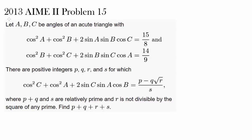We have a question from 2013 AMC 2, Problem 15. The question involves angles ABC of an acute triangle with several expressions. The last expression can be written as p minus q times square root of r over s, and we wish to find p plus q plus r plus s. For simplicity, let's let the last expression be equal to x and find the value of x.